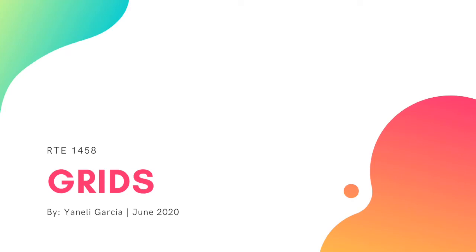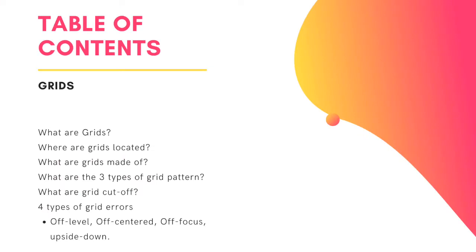Today we're going to be talking about grids — more specifically, we're going to be focusing on grid errors. These are the key points we will be talking about today: what are grids, where are grids located, what are grids made of, what are the three types of grid patterns, what are grid cutoffs, and four types of grid errors.